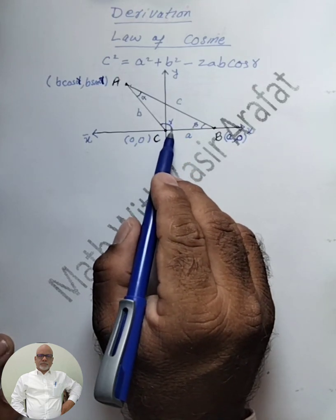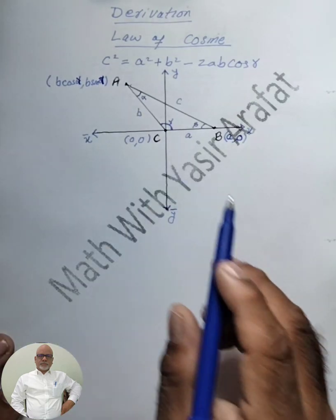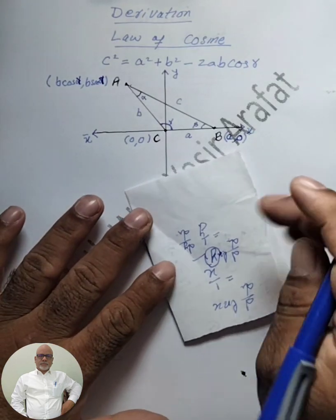The reference angle is gamma and the terminal arm length is b. So the coordinates of A will be (b cos gamma, b sin gamma). For example, with coordinates (x, y), x is r cos theta and y is r sin theta. Here r is b and theta is gamma, so x = b cos gamma and y = b sin gamma. These are the coordinates of vertex A.